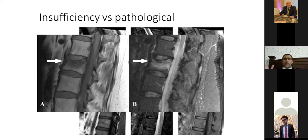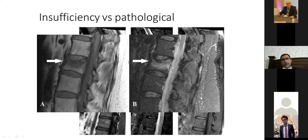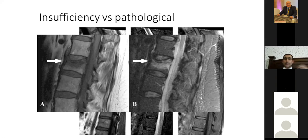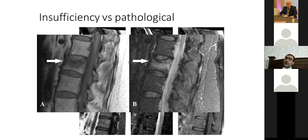Differentiating pathological from insufficiency fracture: in pathological fracture you see bulging of the posterior cortex and may see a retropulsed fragment, whereas in an osteoporotic insufficiency fracture the whole vertebra is wedged but there is no retropulsed fragment. If a fracture is bright on STIR, it is acute or acute-on-chronic. If low signal on T1 and not bright on STIR, it is an old/chronic fracture with no acute component. Always look for previous imaging to compare.